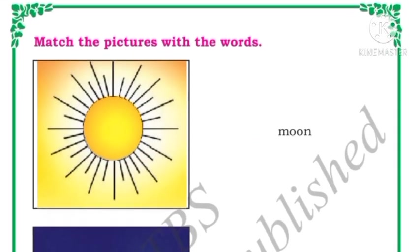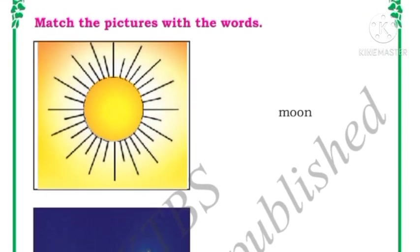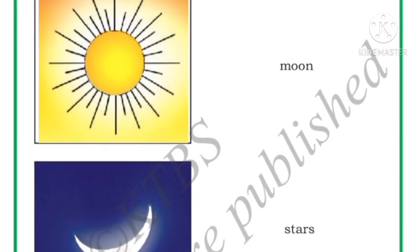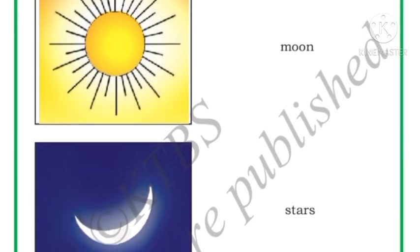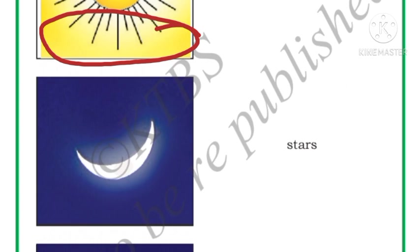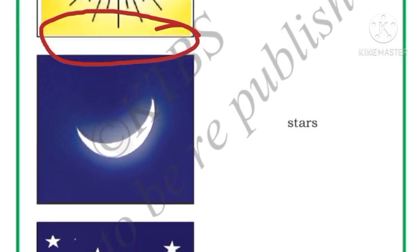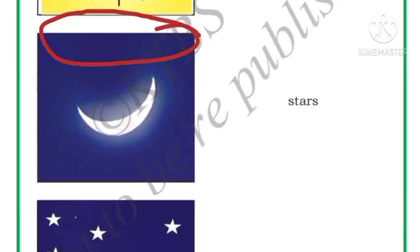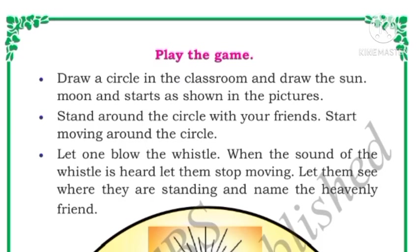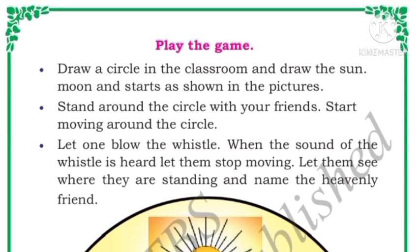Next, match the pictures with the words. Here the words are given and here the pictures are given. You need to match them. This is the sun, then this one is the moon, and this is the stars.